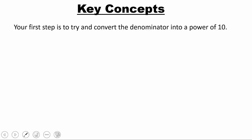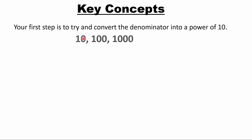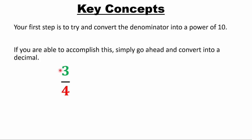What's a power of 10? Any of these: 10, 100, 1000, 10000 — those are all powers of 10. That's step one. For example, 3/4 — look at the denominator. Can you turn it into a 10? No. Can you turn it into 100? Yes — multiply by 25. Whatever you do to the denominator, you do to the numerator.